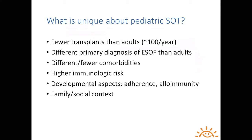Children are also higher immunological risk, so on a per-enrollment basis, you're much more likely to have immune events that can be captured and studied efficiently. There are also developmental aspects, which raise different questions about what we define as success after transplantation — including physical, emotional, and sexual development, issues of adherence, and developmental aspects of alloimmunity. And there's a whole psychosocial context, speaking to the need to evaluate success not only on quality of life for the person, but also the impact on family and care community.